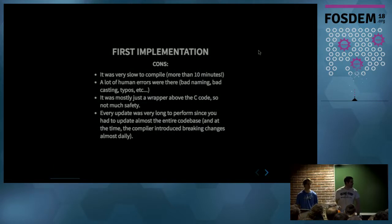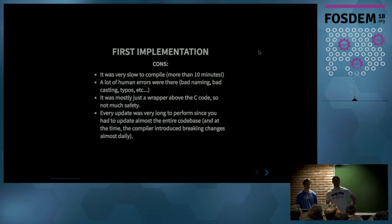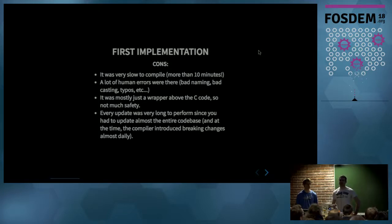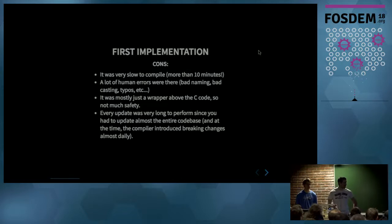Now the cons. It was at the time very slow to compile — we were still in 2015. It wasn't efficient; we had a huge macro to generate all signals. Since it was bound by hand, a lot of typos and human errors were there, casting errors. It was just a wrapper around the C code, one-to-one, not much safety. The compiler was getting updated with breaking changes like every two or three days, so changing thousands of lines at once was quite long for a library this big.